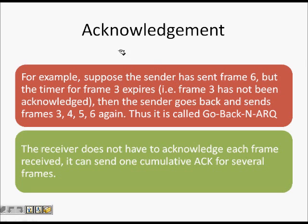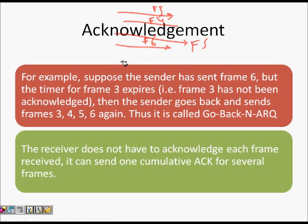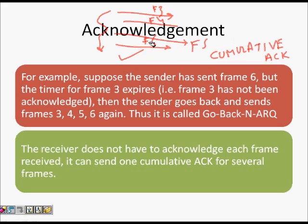Because the receiver is silent (no ACK), the timer expires and all frames sent after the lost frame are resent - this is why it's called Go-Back-N. For example, if the sender has sent up to frame six but the timer for frame three expires, it resends frame three, four, five, and six. There is also cumulative ACK: if frames F3 through F6 were sent and ACK seven is received, the sender knows all frames F3, F4, F5, and F6 were received successfully.